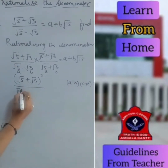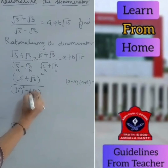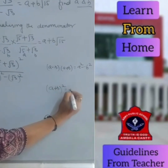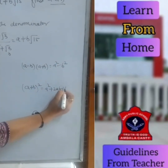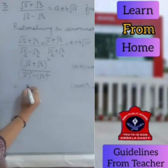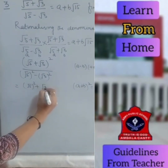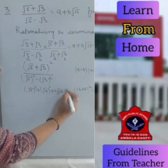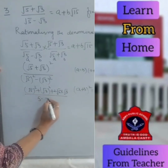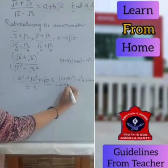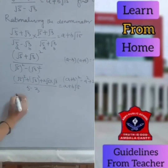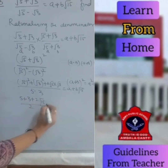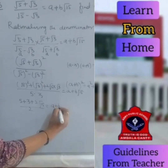So the denominator is root 5 whole squared minus root 3 whole squared, which equals 5 minus 3. In the numerator, using the identity A plus B whole squared equals A squared plus 2AB plus B squared, you get root 5 squared plus root 3 squared plus 2 into root 5 into root 3, upon 5 minus 3. The right-hand side is A plus B root 15. So it becomes 5 plus 3 plus 2 root 15 divided by 2, equal to A plus B root 15.